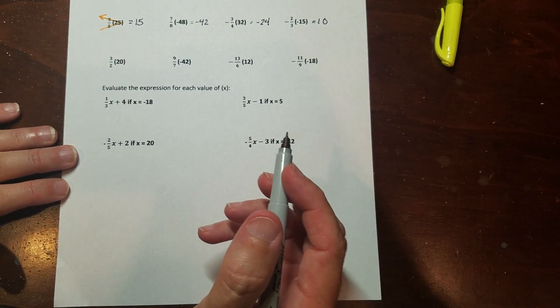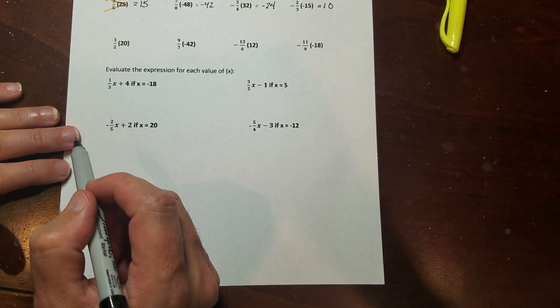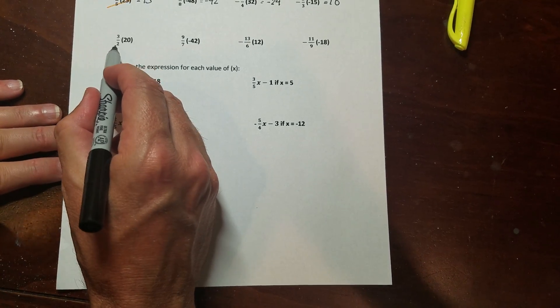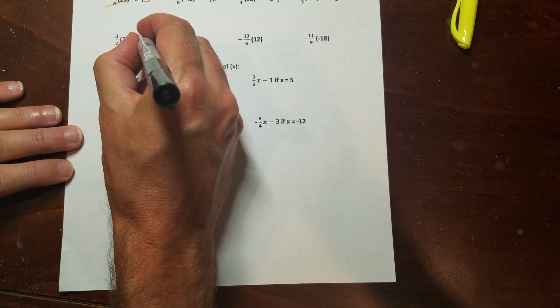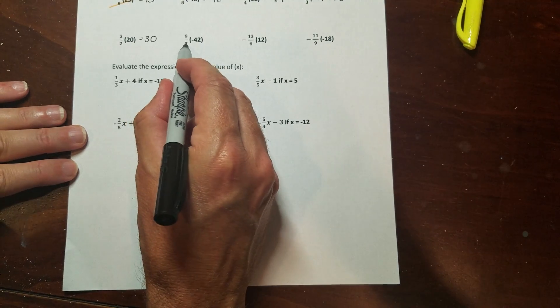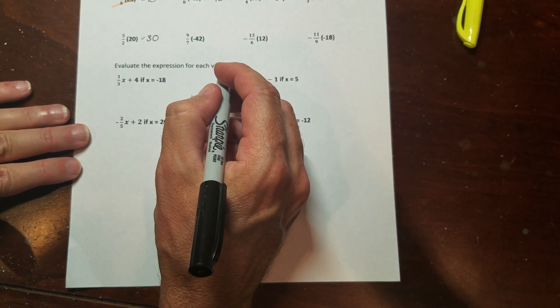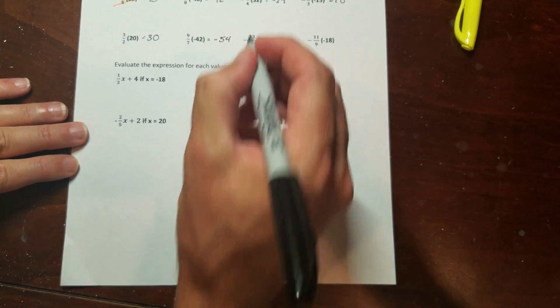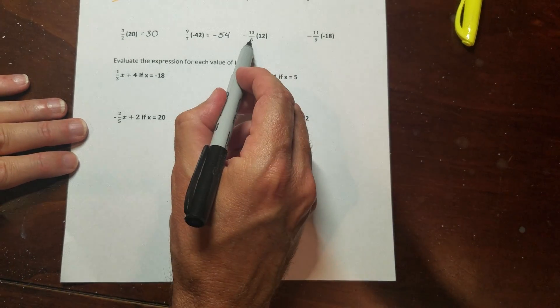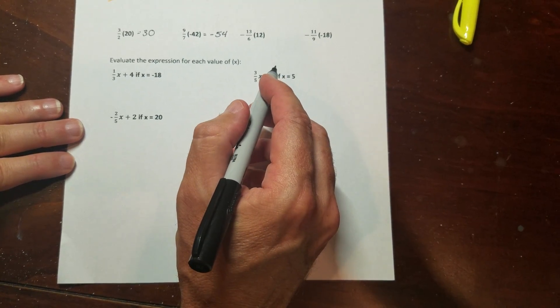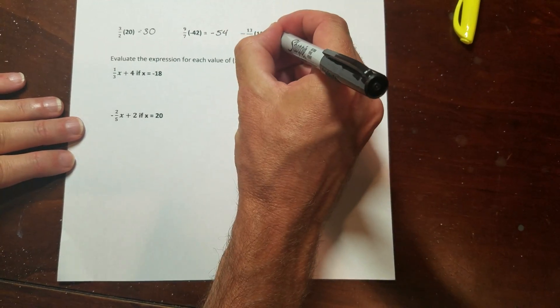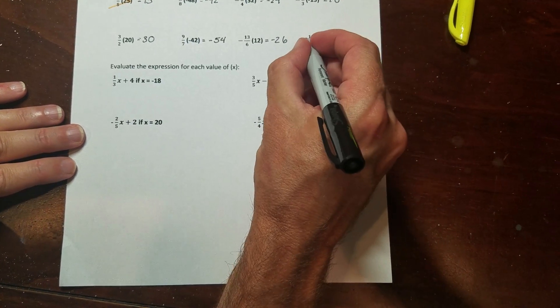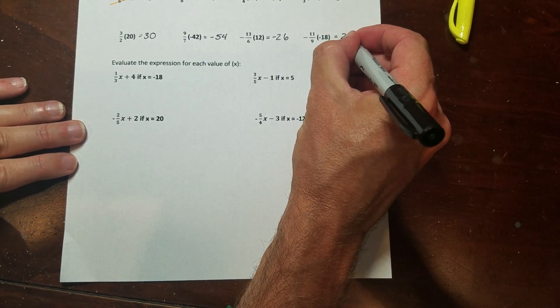Now often times you're going to end up with improper fractions, well guess what, nothing changes. If something's true here, it should be true here, and it is. Twenty divided by two is ten, ten times three is thirty. Seven goes into negative forty-two, negative six times, negative six times nine is negative fifty-four. And then I have a negative six into twelve goes negative two, negative two times thirteen is negative twenty-six. Nine goes in eighteen twice, two times eleven is twenty-two, that's a negative and a negative, so that's a positive twenty-two.